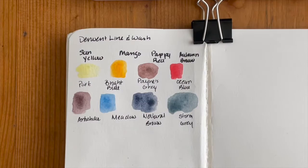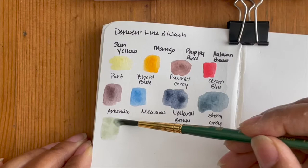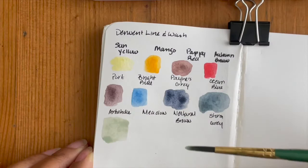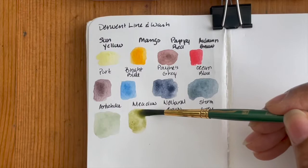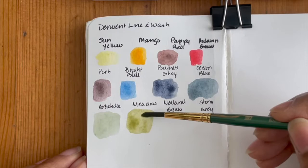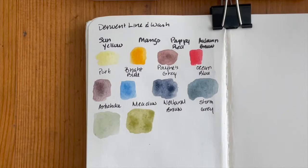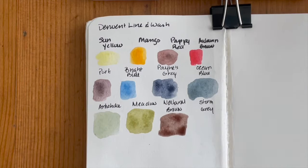Then we have artichoke, which I think is going to be a lovely kind of grayish green. Actually really like this color a lot. And then we have meadow. And I don't know if you guys are picking this up, but it seems to be a little granulating, which I don't mind. Kind of like a dirty green or olive green, also really pretty. Then we're going to go into natural brown. And then lastly, storm gray.